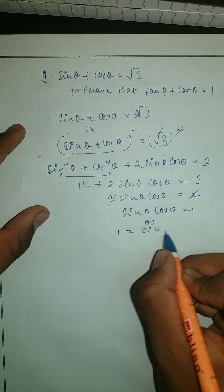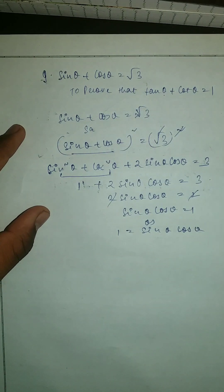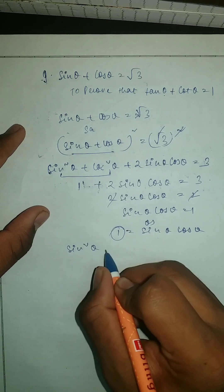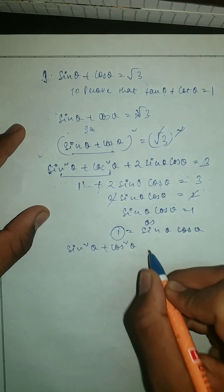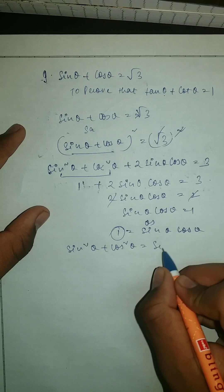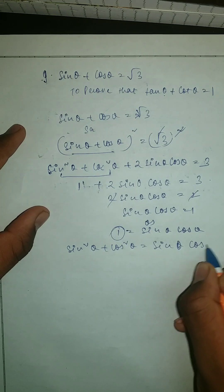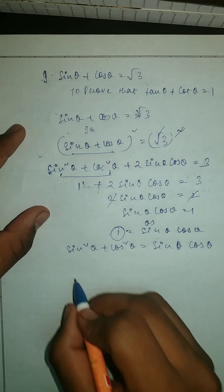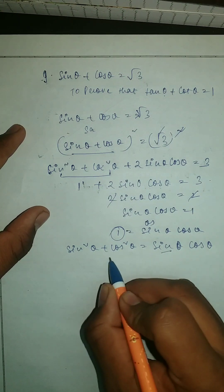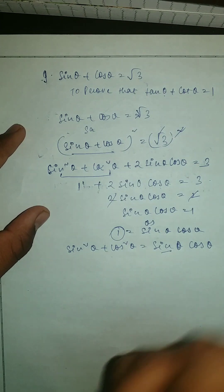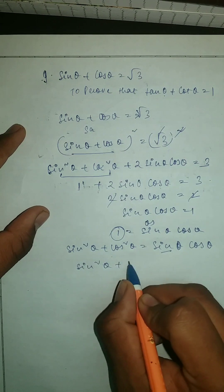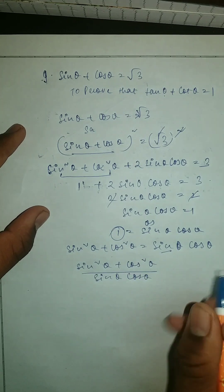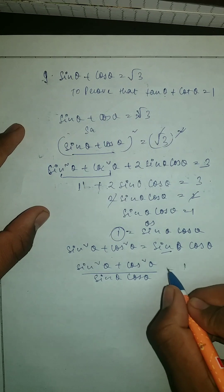We can also say 1 is equal to sine theta cos theta. Now we are going to rewrite this as sine squared theta plus cos squared theta is equal to sine theta cos theta. Then we take sine squared theta plus cos squared theta upon sine theta cos theta, which is equal to 1.